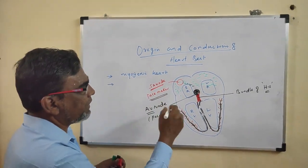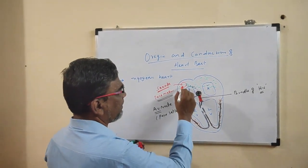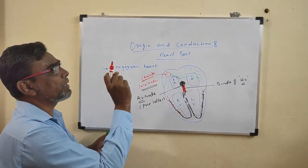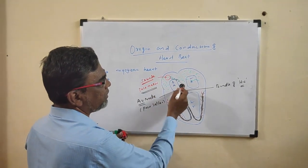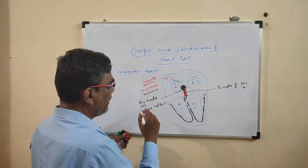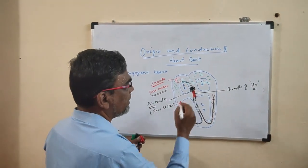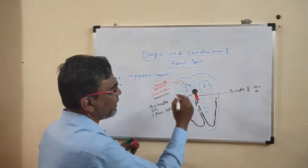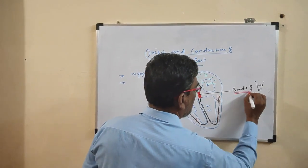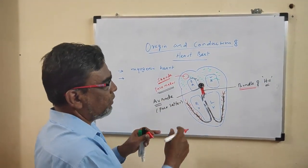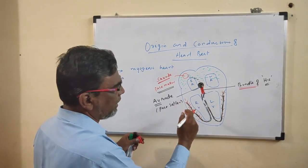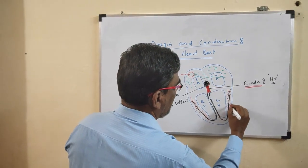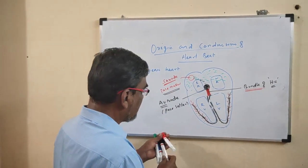So to summarize: the first special type of cells is the SA node, present in the upper part of the right auricle. It has the ability to generate electrical impulses. From the SA node, the impulse passes to the AV node — the atrioventricular node, also called the pace setter. The AV node receives the impulses and passes them to the bundle of His. The bundle of His gives two branches — one for the left ventricle and one for the right ventricle. The small branches in the ventricles are called Purkinje fibers.